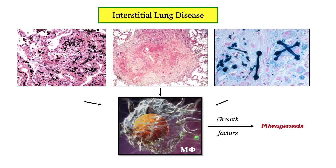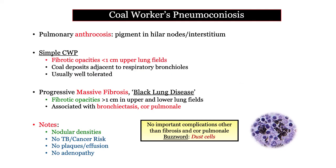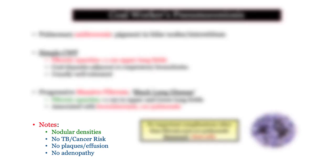Let's summarize. These are all interstitial lung disorders sharing the same characteristics of the prototypic idiopathic pulmonary fibrosis, including crackles, pulmonary hypertension, widened A-a gradient, etc., in addition to the unique characteristics covered previously. Here are the highlights of coal exposure: anthracosis, fibrosis, and the macrophage role as dust cells while elaborating cytokines. The notes section is important for what is not present in coal workers' lungs: no TB, cancer, plaques, or adenopathy.